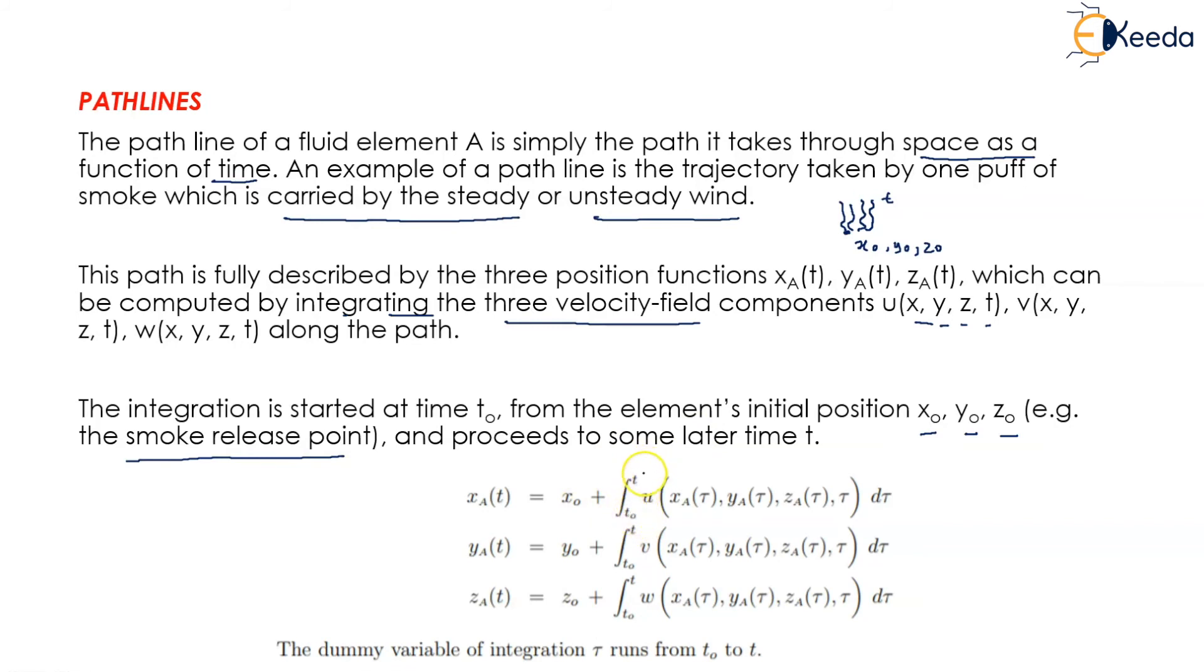From t naught till t are the limits of integration. Now, x of t is x naught plus the integration of u with respect to x, y, z, and t from the limit t naught to t. Similarly, for y the initial value becomes y naught, and this u gets replaced by the velocity component in the y plane, that is v, and in z it becomes w. The dummy variable of integration τ runs from t naught till t, and we integrate all these with respect to τ.